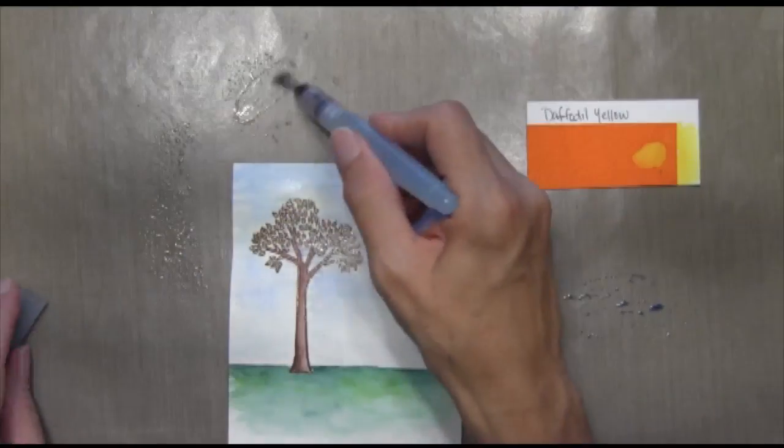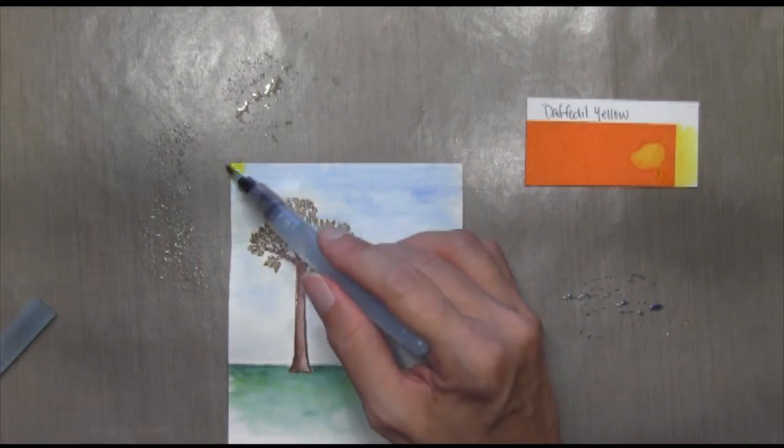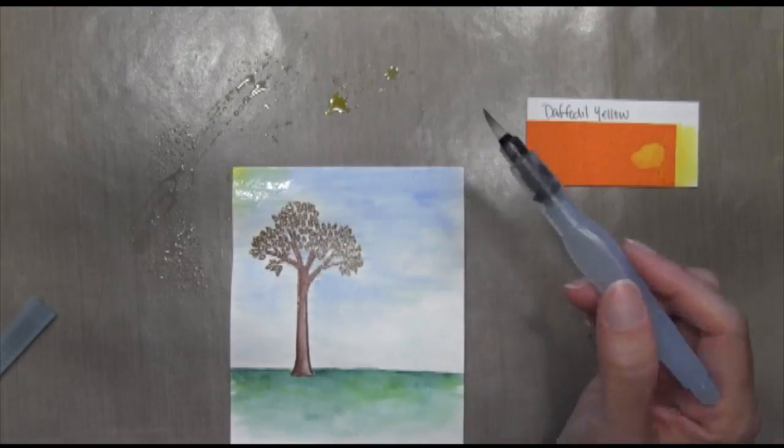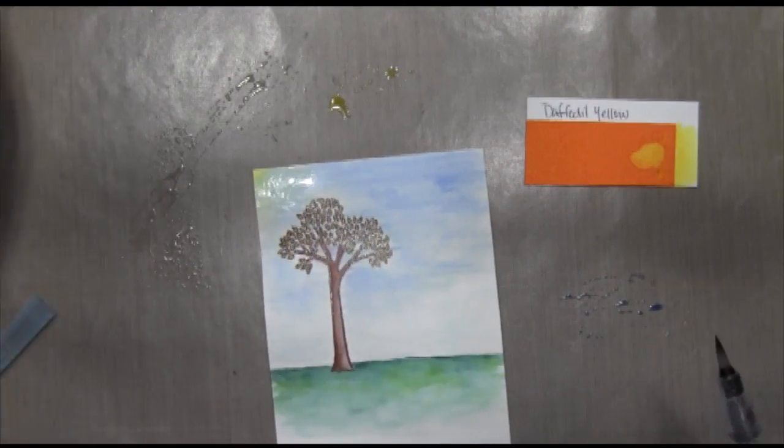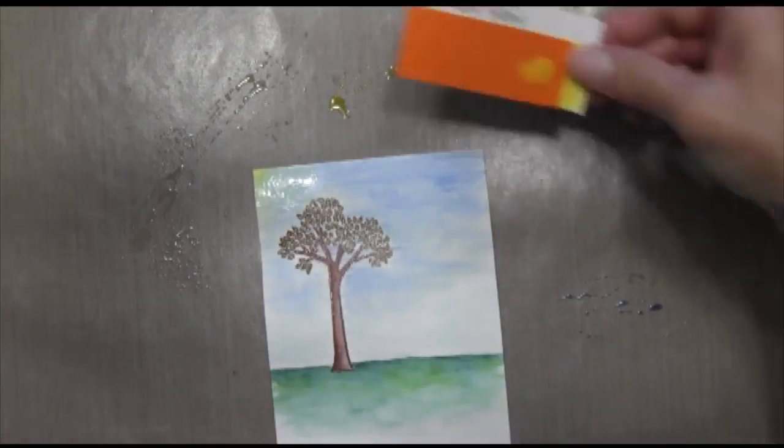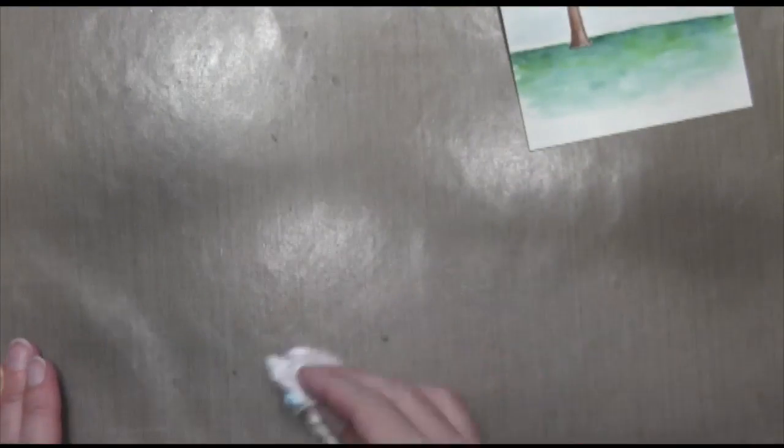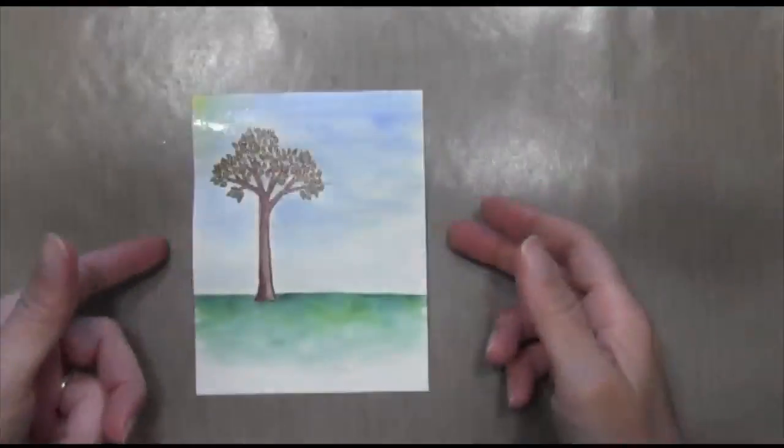And then finally what I decided is I wanted to have a little bit of sunshine in there so I took my daffodil yellow and my thin aqua painter. And I just put a little tiny bit of the yellow in the corner and I faded it out as I got toward the tree with more water. All right so I'm going to clean this all up and I'm going to let it dry.